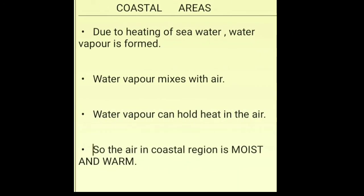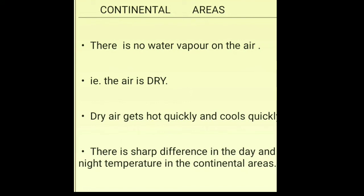Let us see this in more detail. In the coastal areas, due to the heating of the seawater, water vapour is formed and mixes with the air, meaning the air will have moisture in it. Water vapour has the capacity to hold heat in the air, so the air in the coastal area will be moist and warm — humid and hot. In the continental area, there is no water body, so there will be no water vapour, no humidity or moisture in the air. That means the air there is dry. Dry air gets hot quickly and gets cool quickly, so there is a sharp difference in the day and night temperature — the day will be very hot and the night will be very cool.